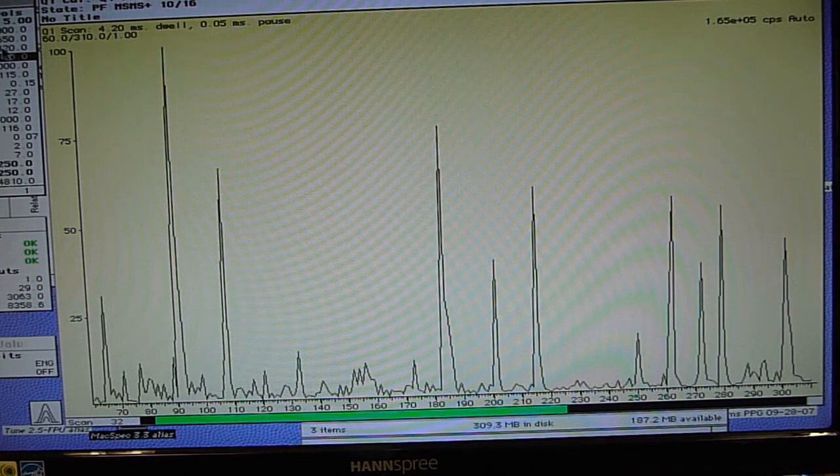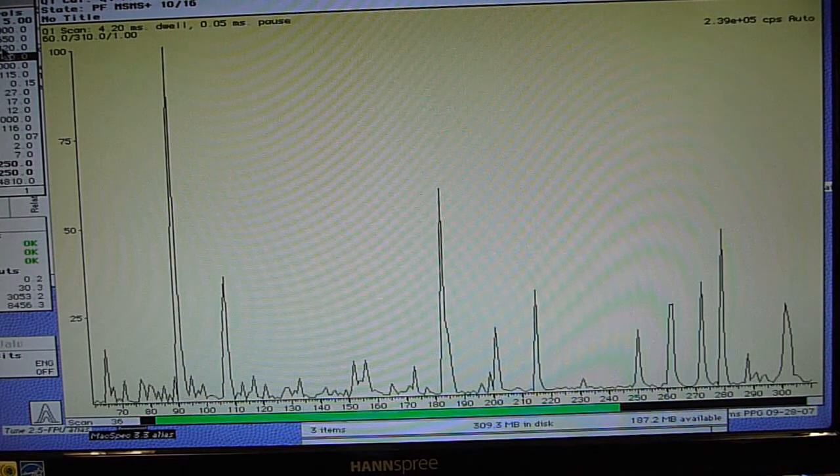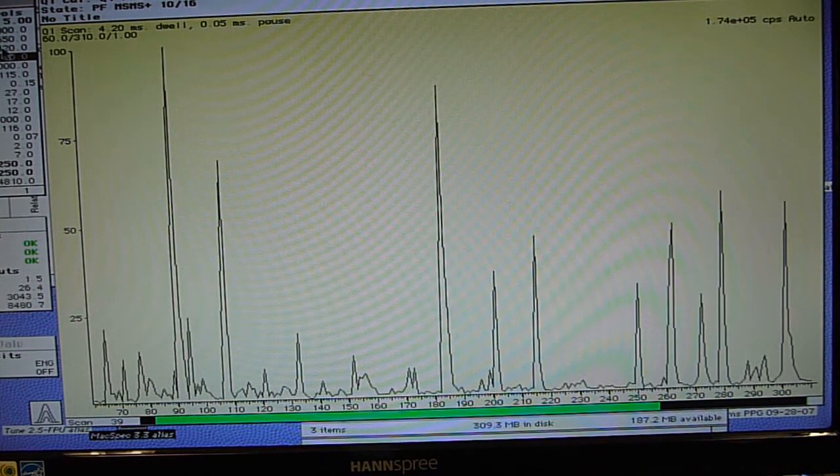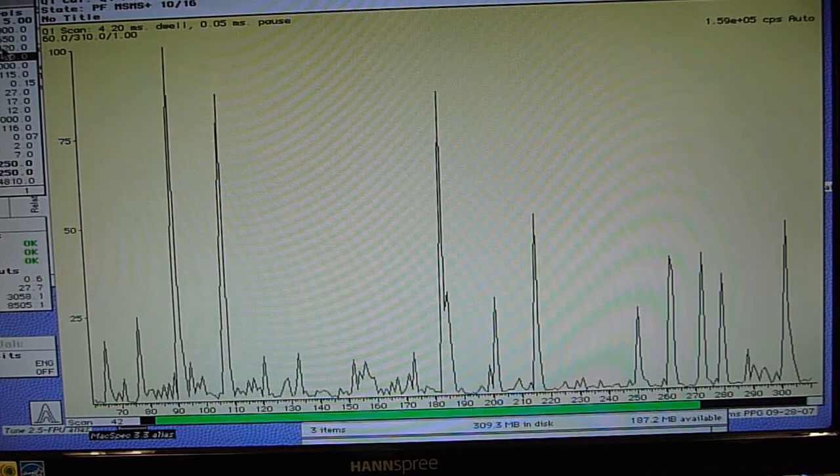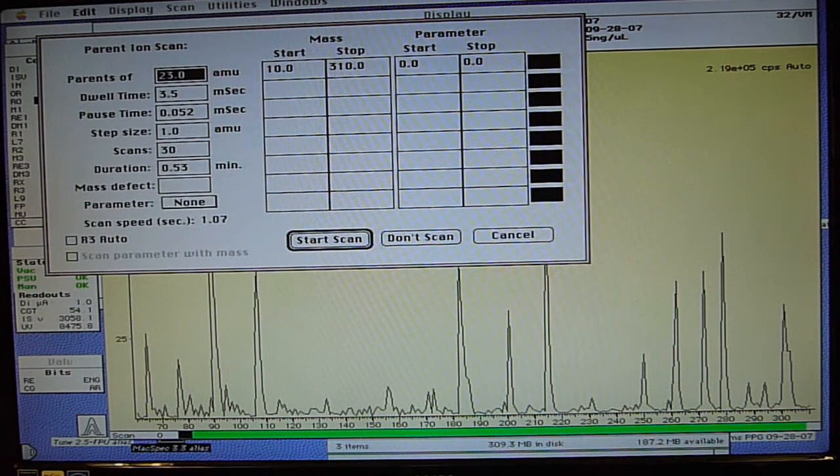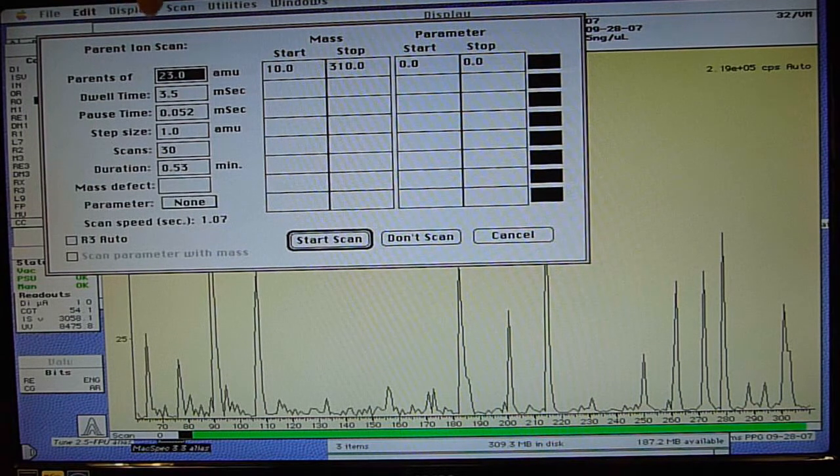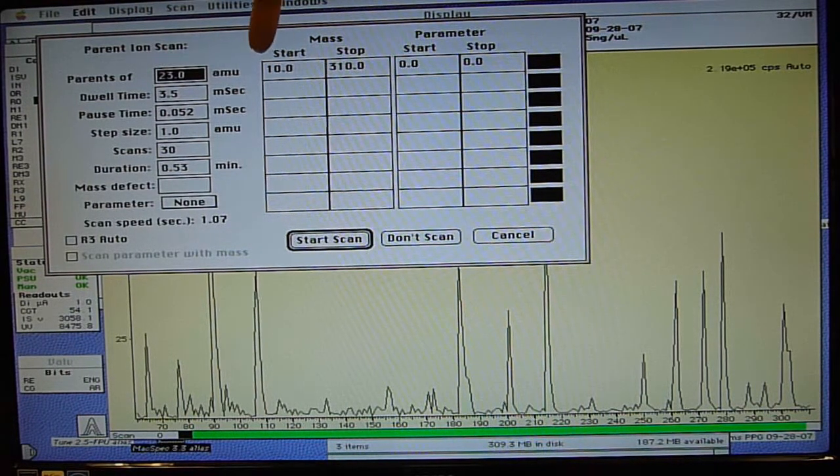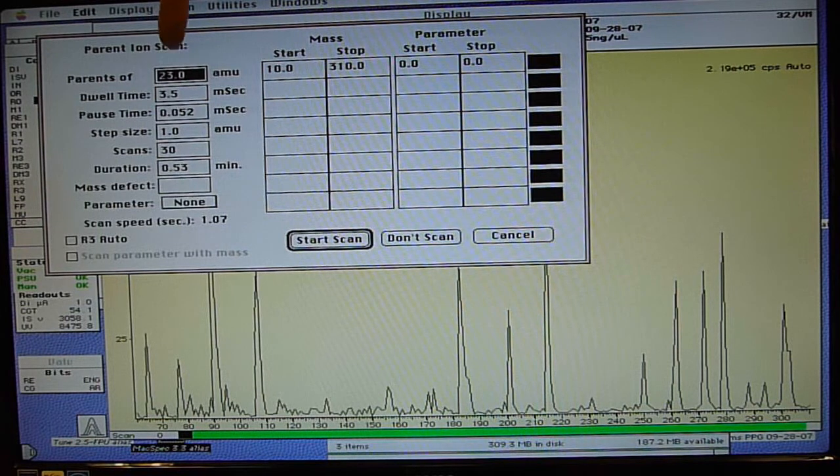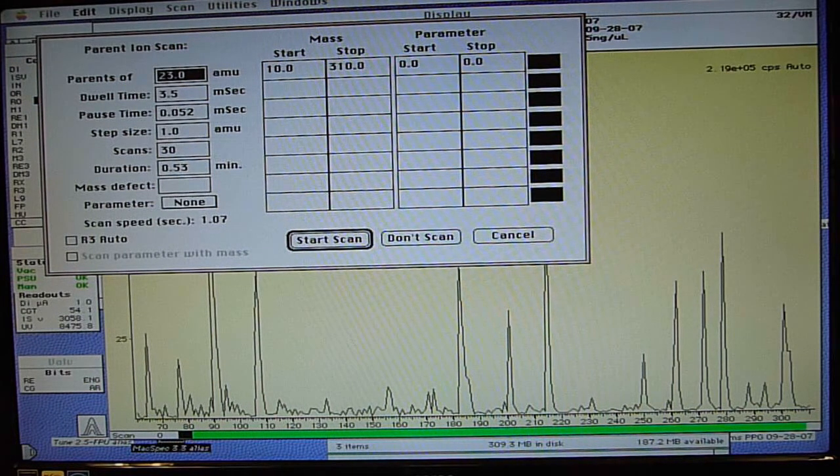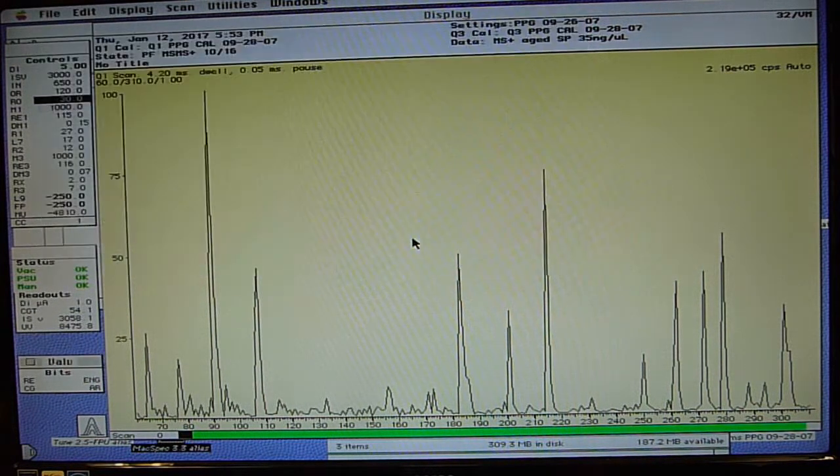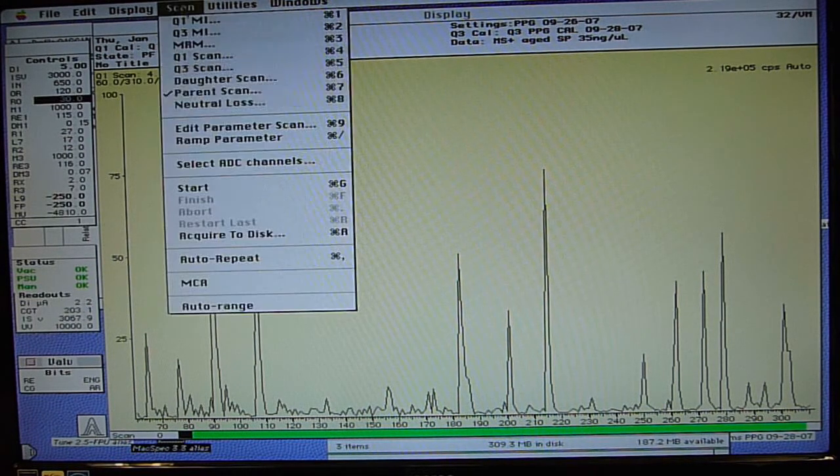So now we're going to set up for our precursor ion scan. Or in this terminology for this mass spec, since it was a 20th century mass spec, it's called a parent ion scan. So Q3 is going to sit at 23 AMU. Q1 is going to scan from 10 to 310. It's going to go in one AMU steps. Each step is going to be 3.5 milliseconds. We're going to get 30 scans. And since this is going to be in the MTA mode, and start.